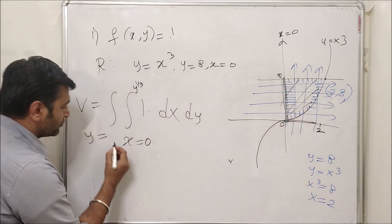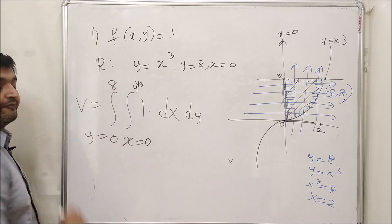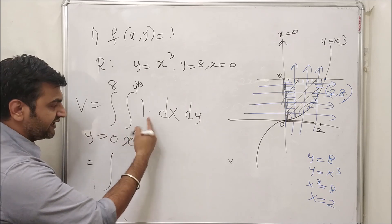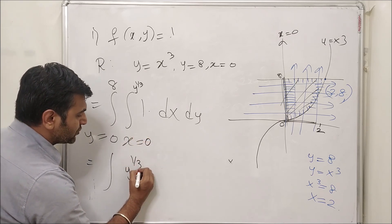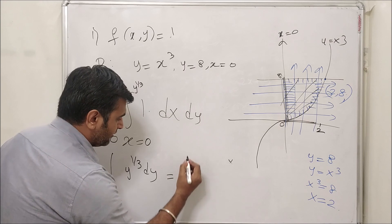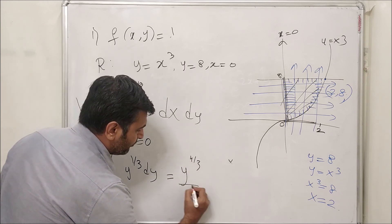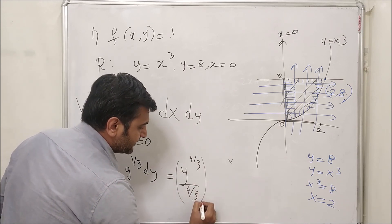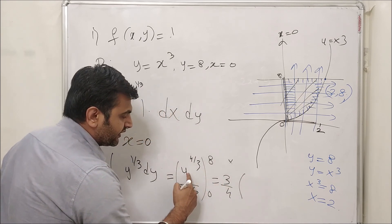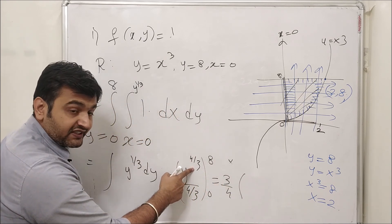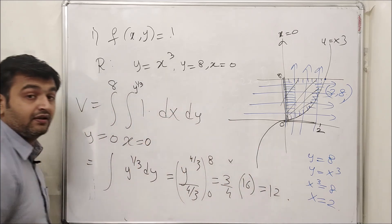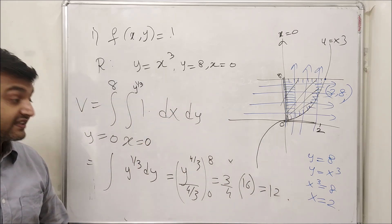With f = 1, integrating with respect to x from 0 to y^(1/3) gives y^(1/3). So we have the integral from 0 to 8 of y^(1/3) dy. Integrating: y^(4/3) / (4/3) evaluated from 0 to 8 = (3/4) · 8^(4/3) = (3/4) · 16 = 12. We get the same answer, 12.